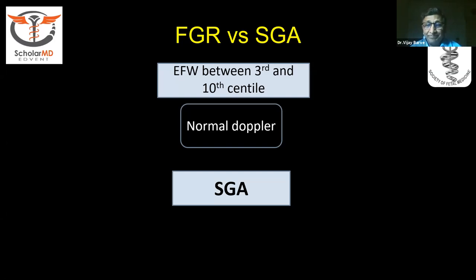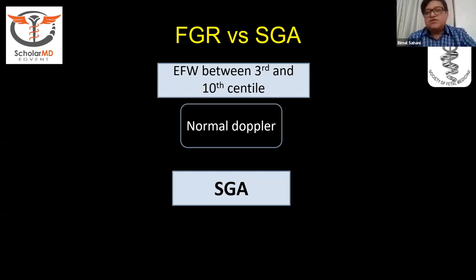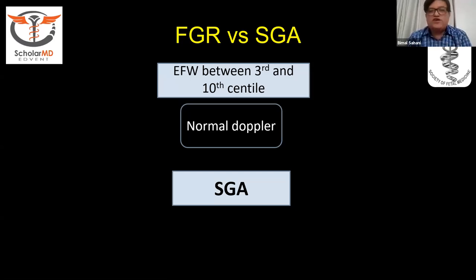In simple words: fetal weight less than 3rd centile is FGR. If it is between the 3rd and 10th centile — if Dopplers are abnormal, it's FGR; if Dopplers are normal, we label it SGA. Thank you for simplifying it.